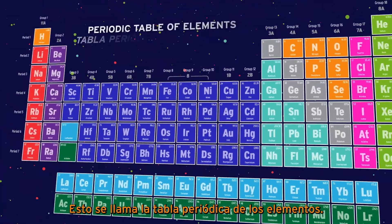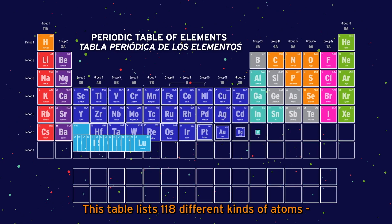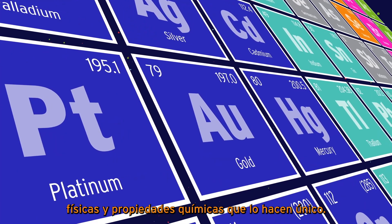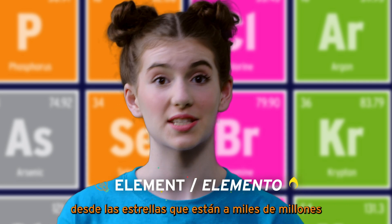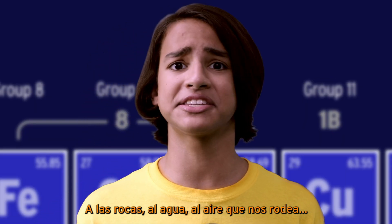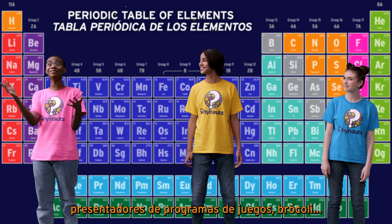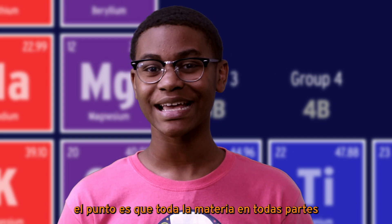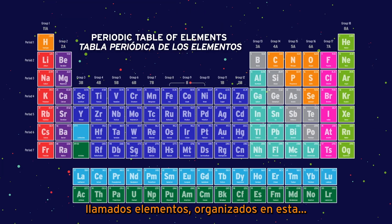This is called the periodic table of elements. Esta tabla enumera 118 diferentes tipos de átomos, se llaman elementos. Every element has characteristic physical and chemical properties that make it unique. These elements make up everything in the universe — from the stars that are billions of miles away, to rocks, water, the air around us, even soccer balls, milkshakes, gumballs, snow cone machines, broccoli. The point being is, all matter everywhere is made up of different types of atoms called elements, organized on the periodic table.